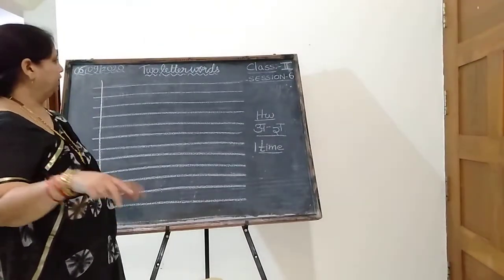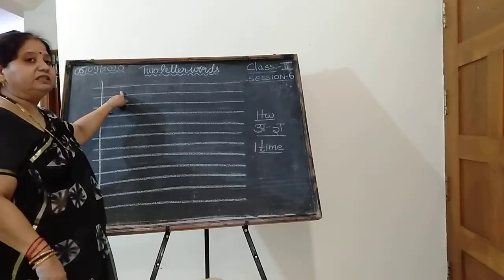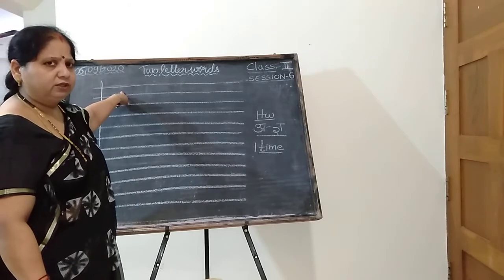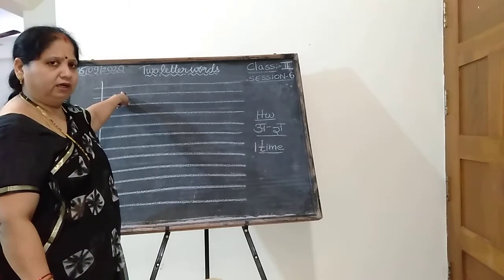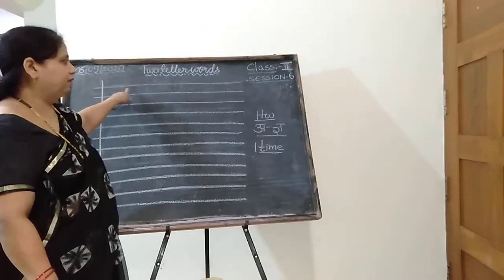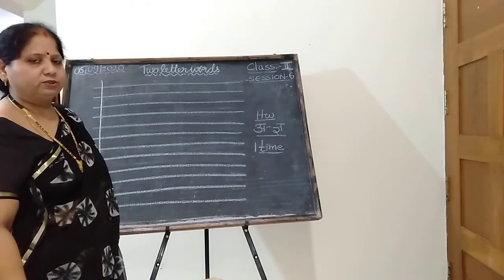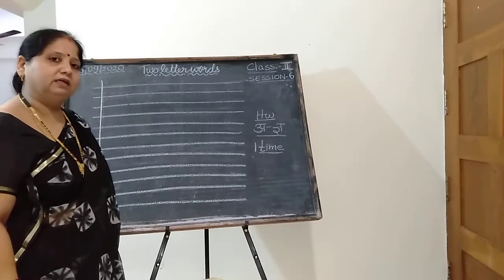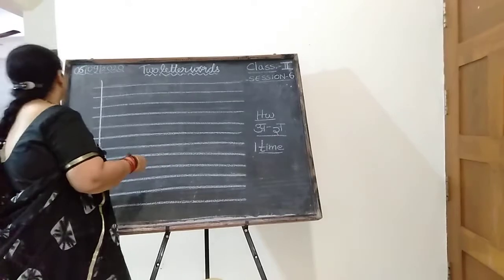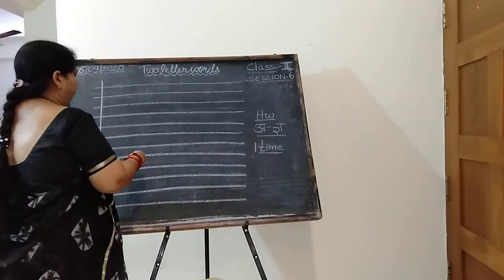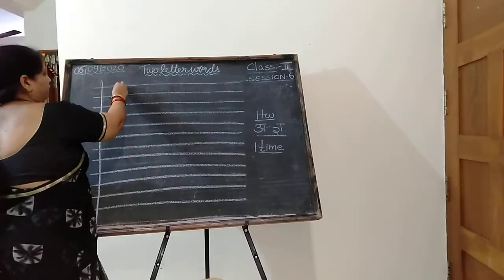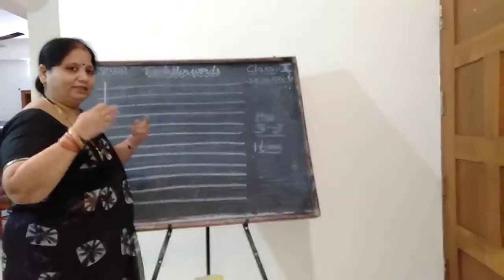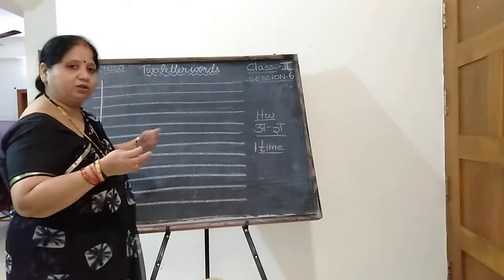Now we are going to start two-letter words. Before that, we will write the Vyanjan. What is Vyanjan? Svar means A se lekar Aha — the vowels from A to Aha. Then what is Vyanjan? It is consonants: K, Kh, G, Gh, and so on. Those letters come under consonants. Now let me start the class on Vyanjan. First I will show you the Vyanjan, then we will write the two-letter words and how to collect them from the consonants.